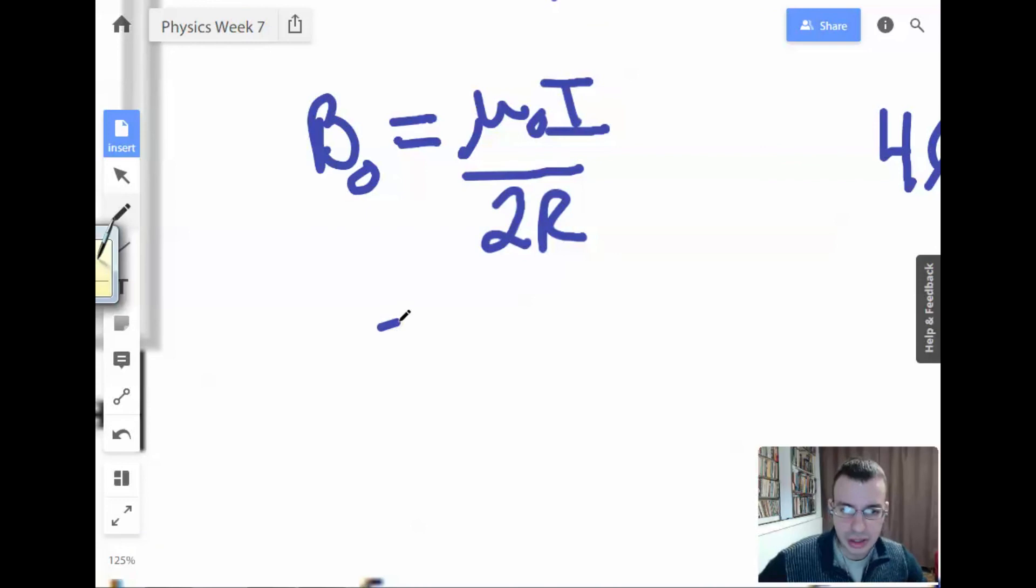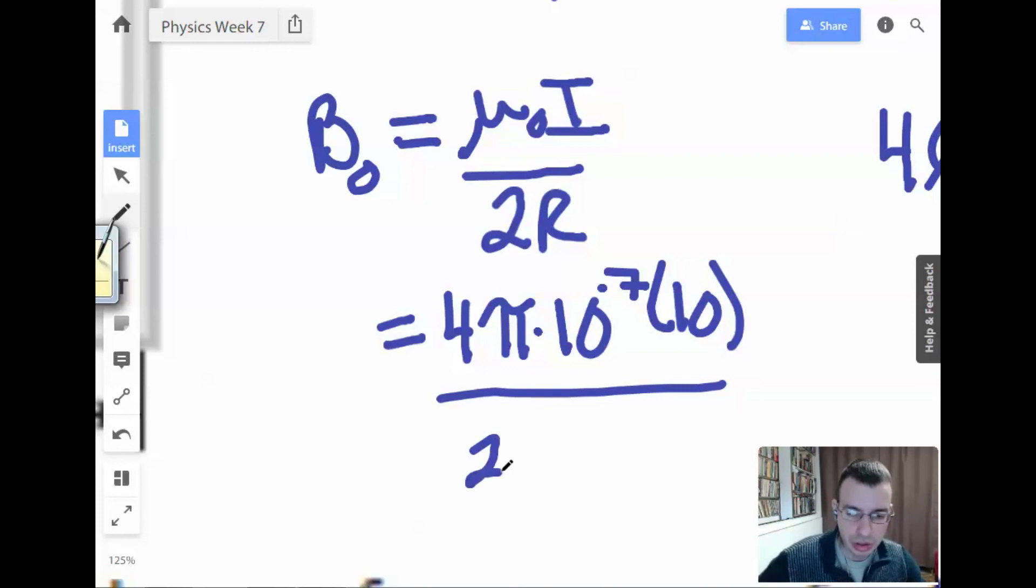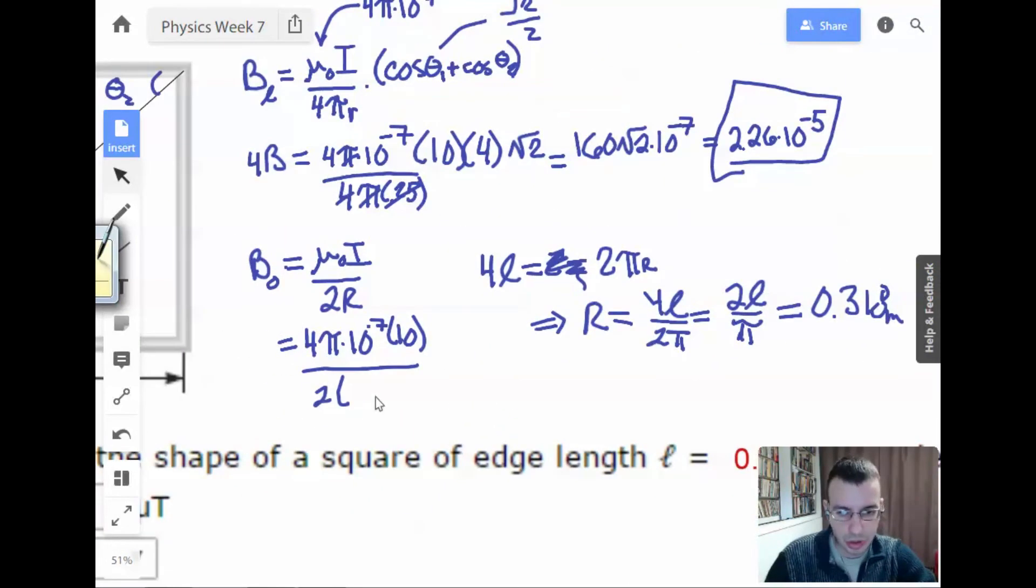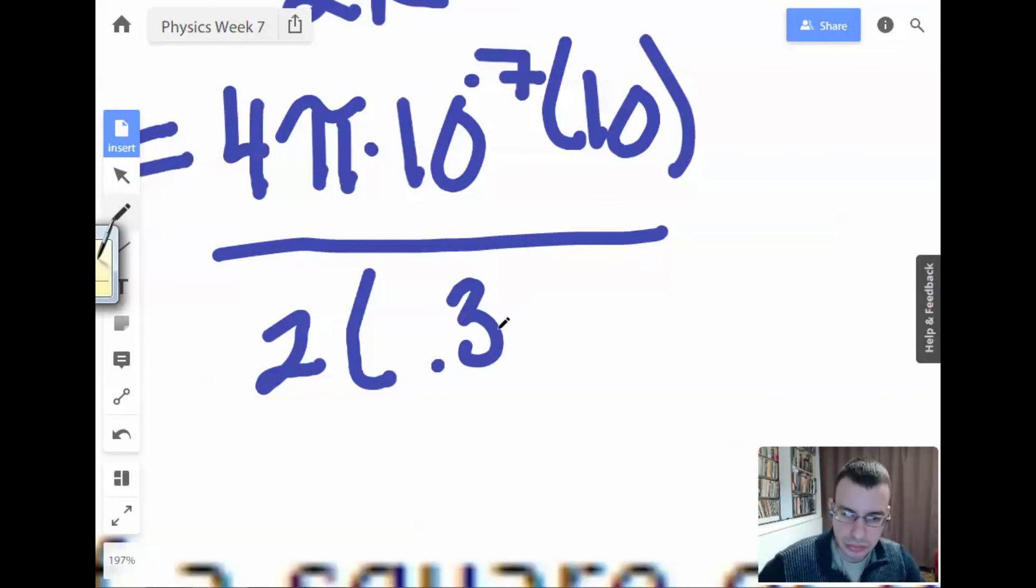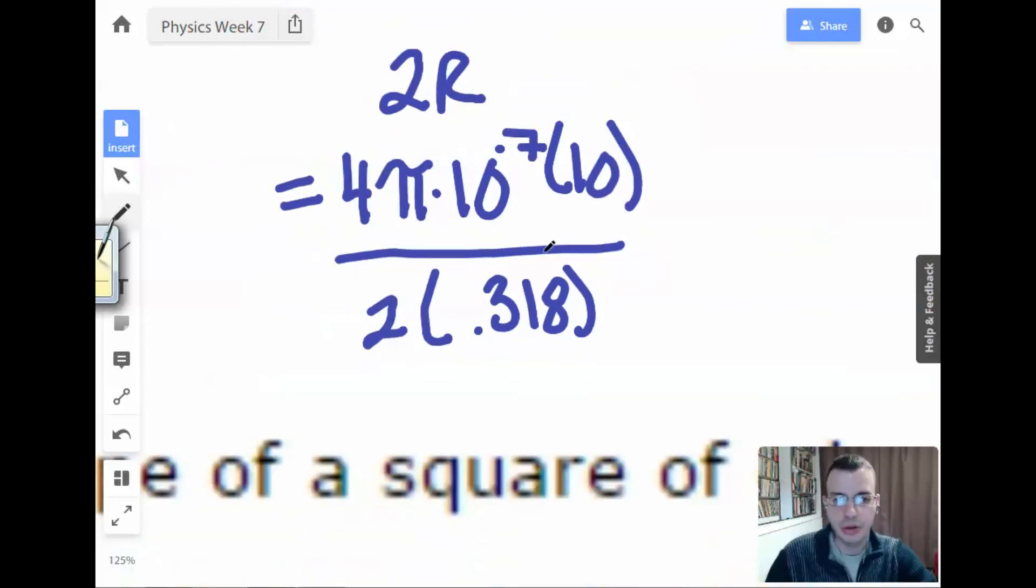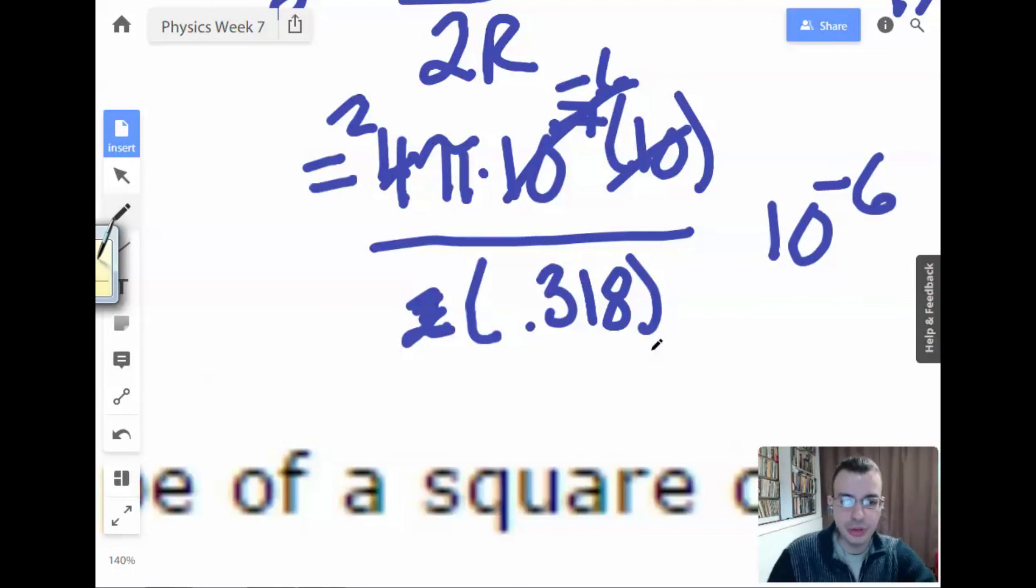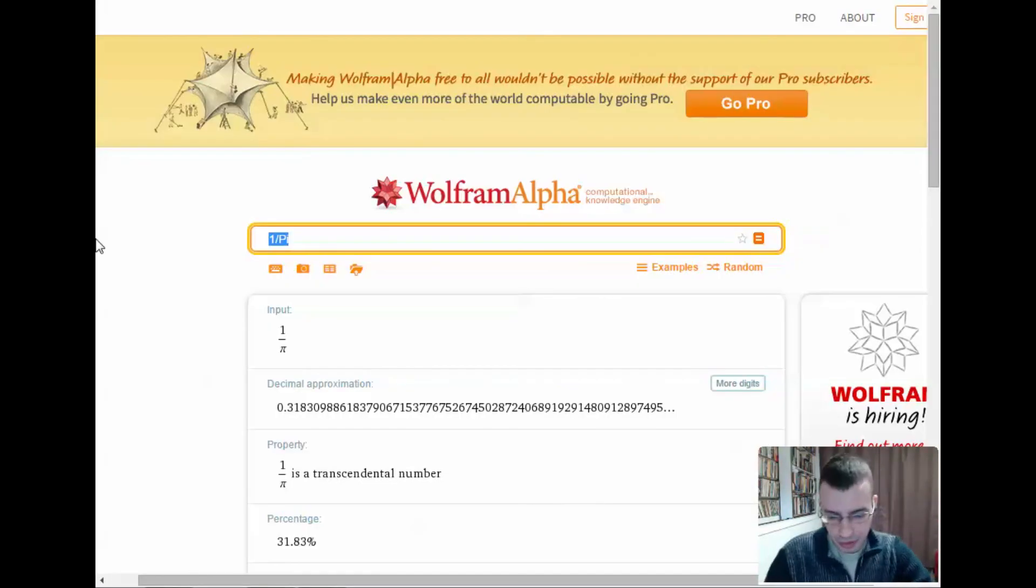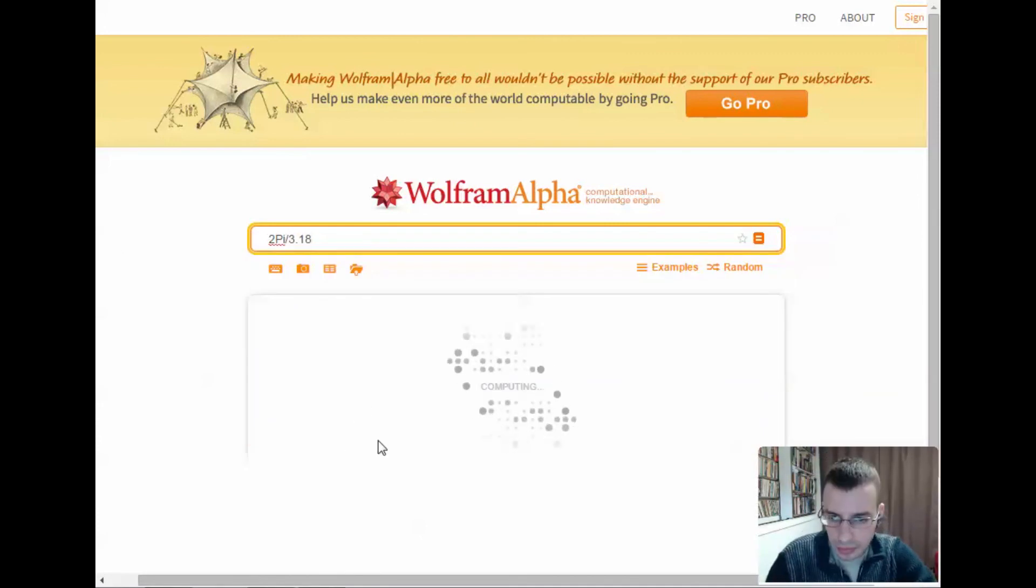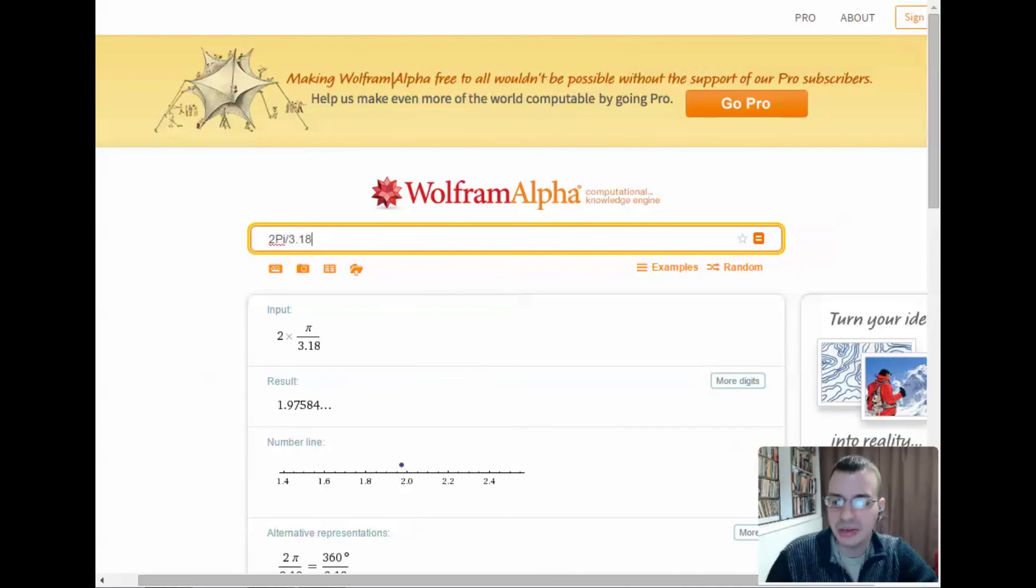We have equals 4 pi times 10 to the negative 7th. We have our 10 amps. We have our 2. We have 0.318. Let's see what sort of simplifying we can do. I'm going to start by changing this to a 2, and this to a negative 6. I'll leave the negative 6 over here. That'll be our micros. So we're going to do 2 pi divided by 0.318. I'm going to say that's going to be about 2, about 20. Let's see what I figured out: 1.98.